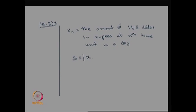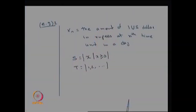Therefore, x is not restricted to integers — it can be a real number. So the possible values of x are x ≥ 0, and the parameter space T represents time units — every minute, every 5 minutes, every 10 minutes, or every hour. Therefore, this forms a countably finite or countably infinite set, making this stochastic process a discrete time, continuous state stochastic process.